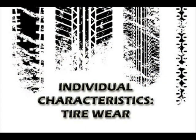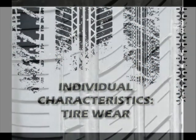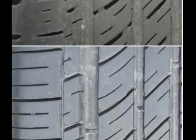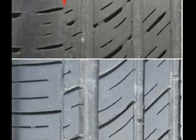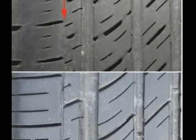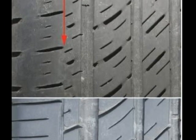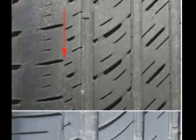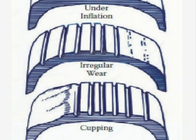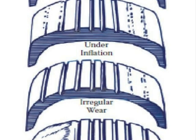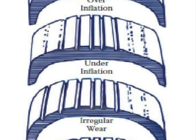Individual Characteristics Associated with Tire Wear. Tire wear is caused by the repetitive contact of the tread with road surfaces. Excessive wear can obliterate minor grooves and sipes on the tread. Common types of wear include cupping and irregular wear.